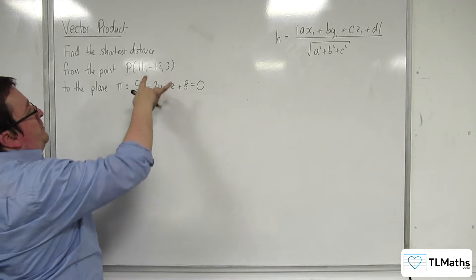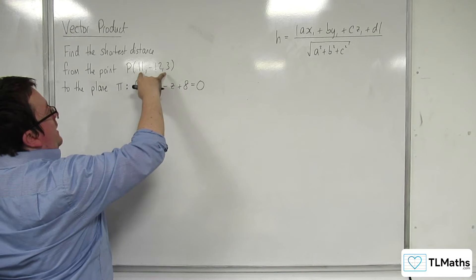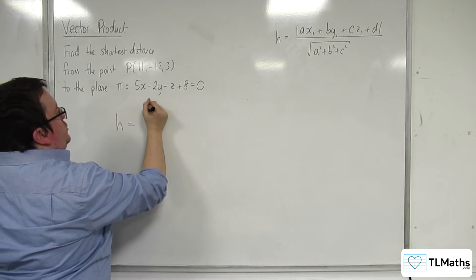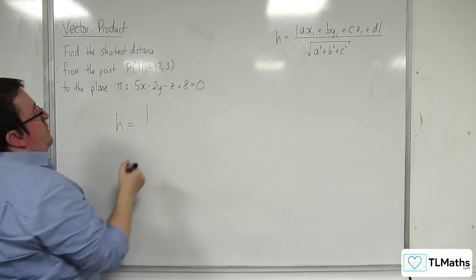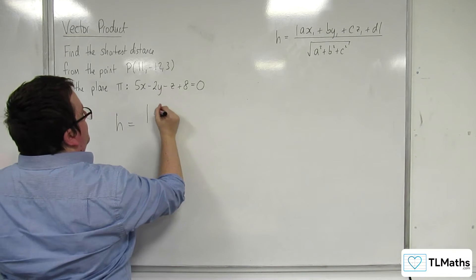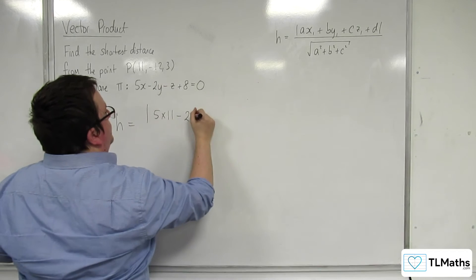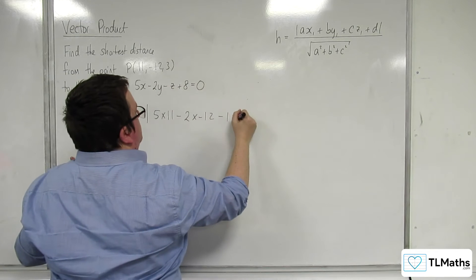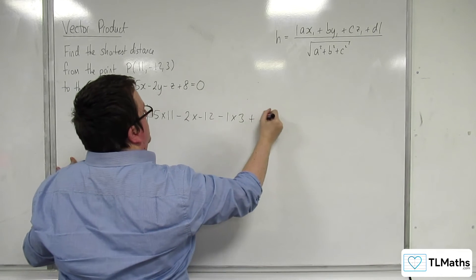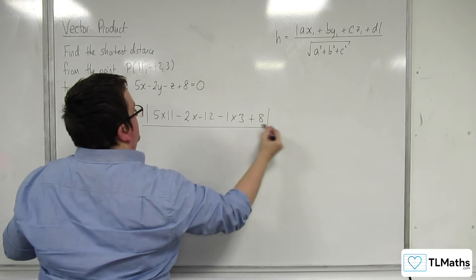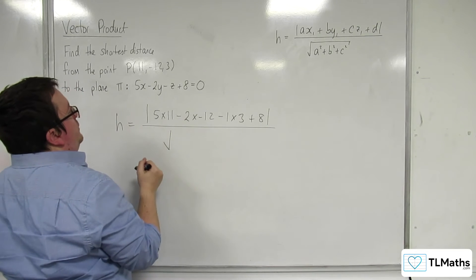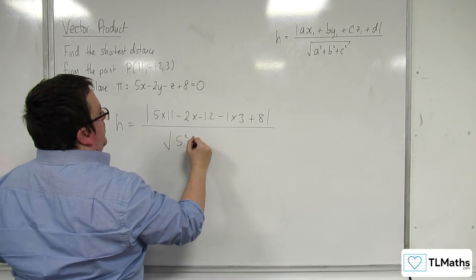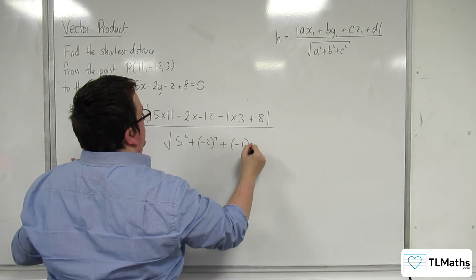What you do is substitute these values in — x₁, y₁, z₁ — into the formula. So h is equal to the magnitude of 5 times 11, take away 2 times minus 12, take away 1 lots of 3, plus 8 (that's the plus d), divided by the square root of 5 squared plus minus 2 squared plus minus 1 squared.